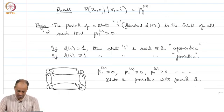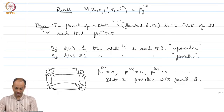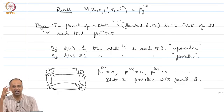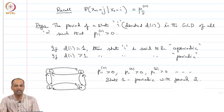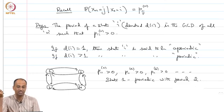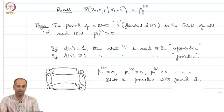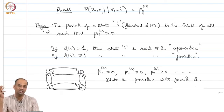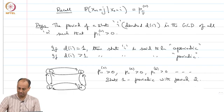This is the meaning of periodicity. If a state has period 1, meaning the GCD is 1, then such a state is said to be an aperiodic state. If the period is anything greater than 1 — 2, 3, or whatever — then the state is said to be periodic with that period.